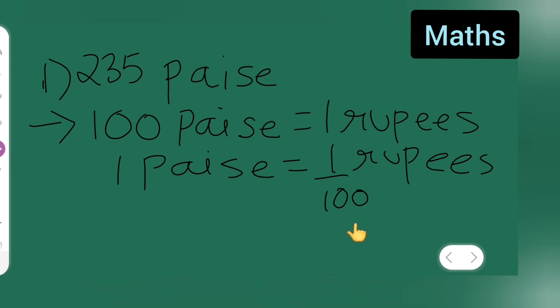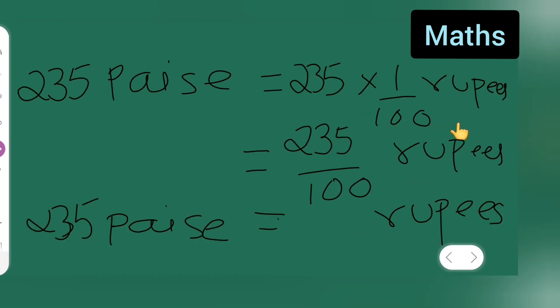If it is 2 paise it will be 2 upon 100 rupees. If it is 3 paise it will be 3 upon 100 rupees. So here it is 235, now it will be 235 upon 100 rupees over here.